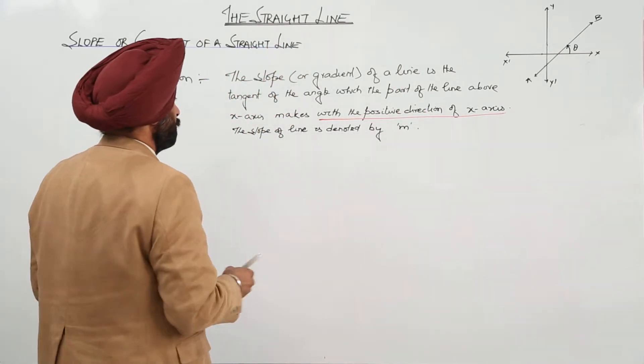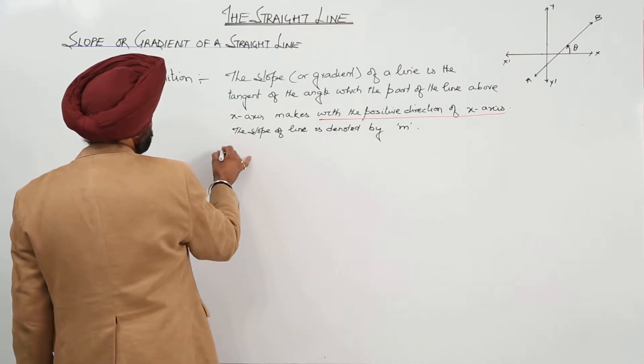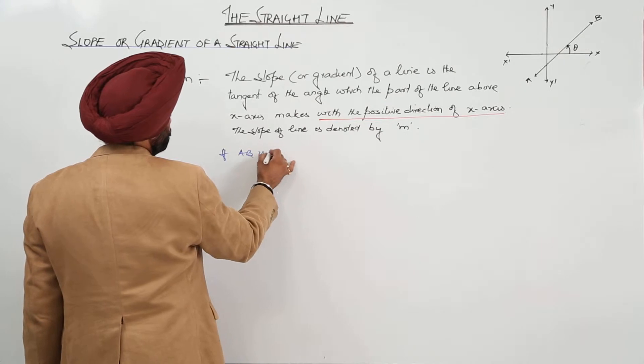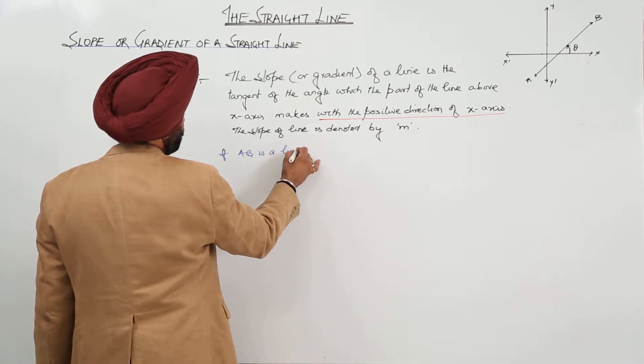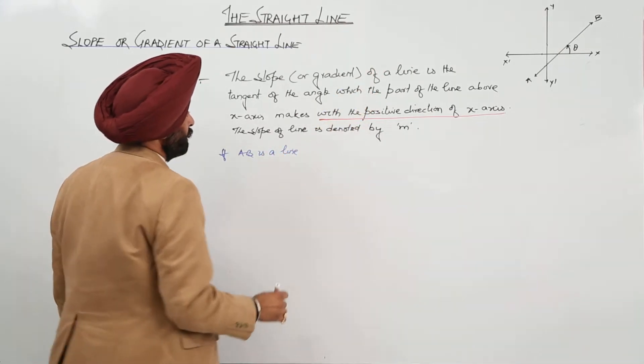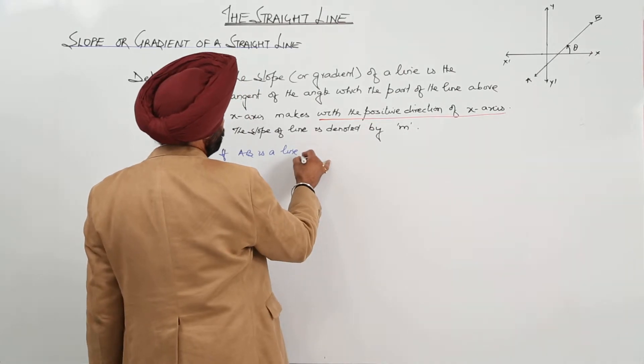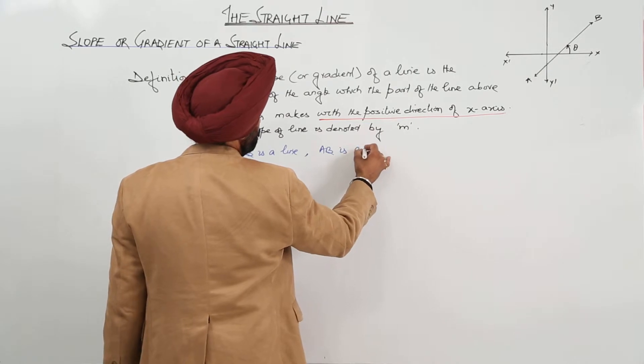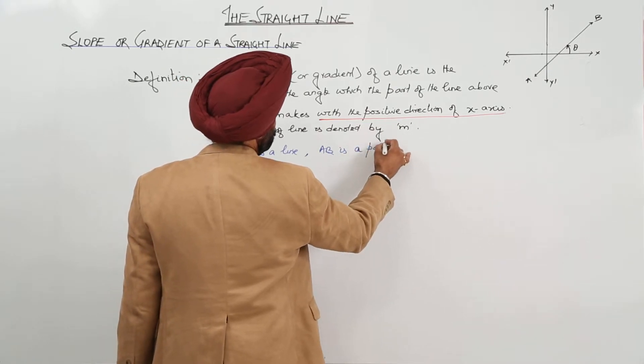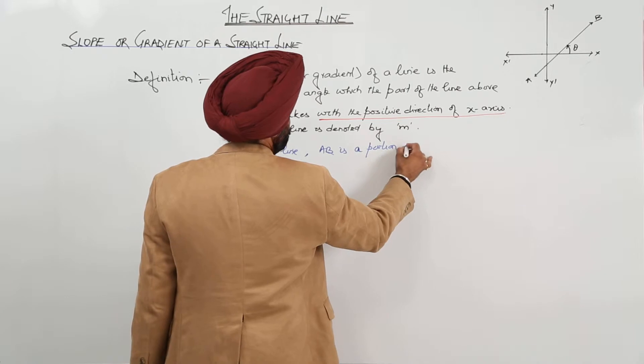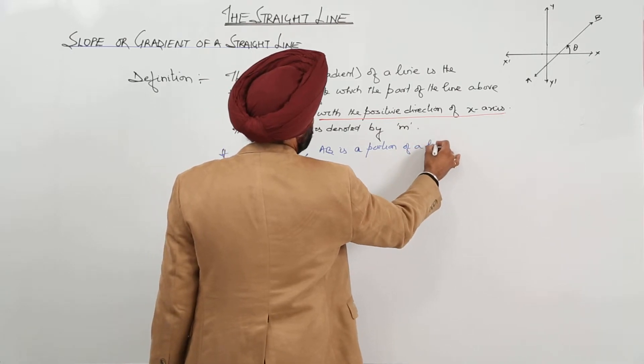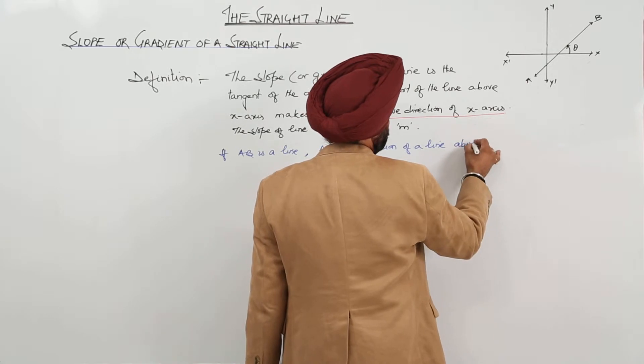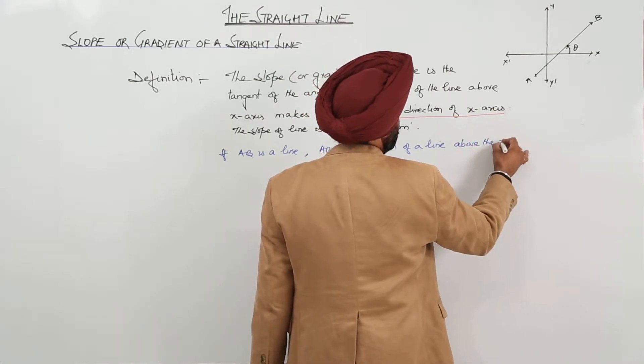Now, for the figure, if AB is a line in the given figure, or we can write: if AB is a portion of a line above the x-axis.